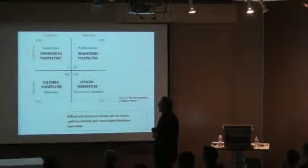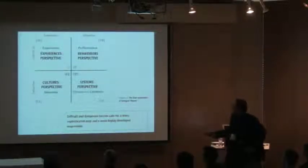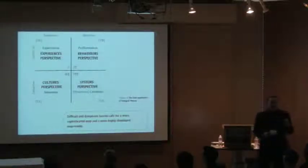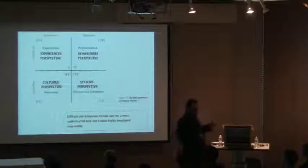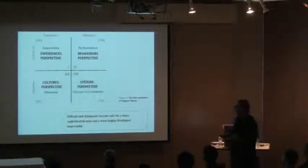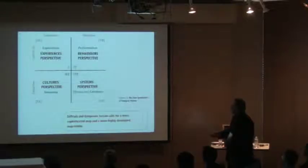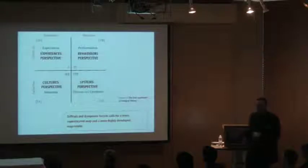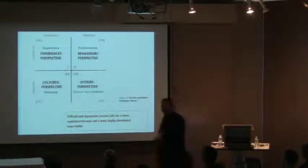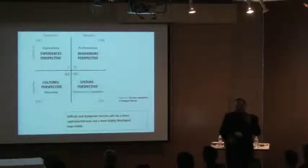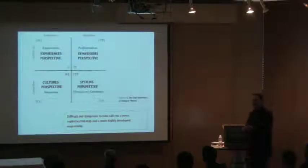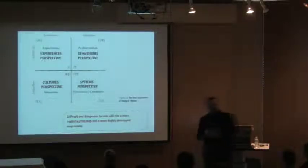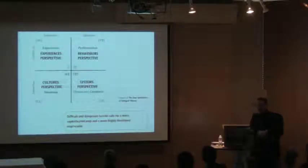We call the first one the behaviors perspective — the upper right perspective, or the realm of 'it' — and what it's mostly concerned with is performance. In architecture, it's interested in how you measure the effectiveness and efficiency of energy and materials use. That's the worldview of the engineer within architecture. From the lower right perspective — objective but collective, an inter-objective perspective — that's the realm of systems. What counts for value there is how something fits into a larger context: social, environmental, or infrastructural.